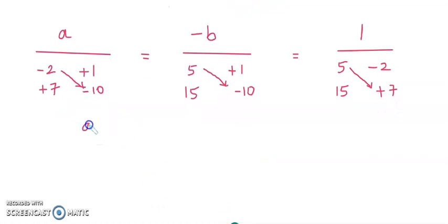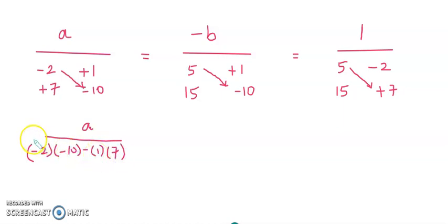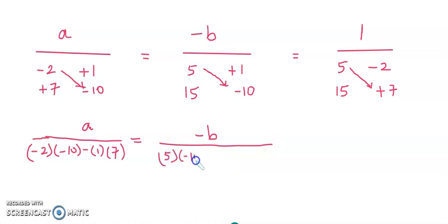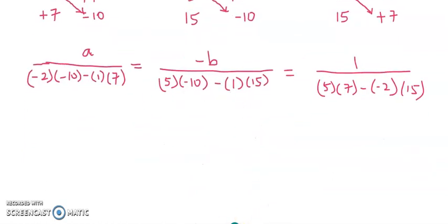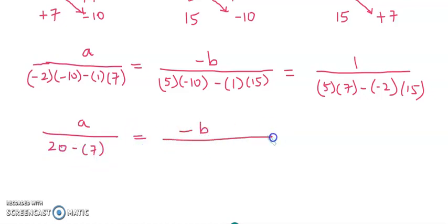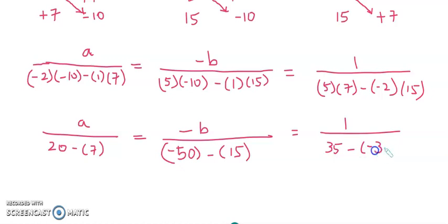So let us write down: a upon, minus 2 multiplied by minus 10 minus 1 multiplied by 7 equals to minus b — 5 multiplied by minus 10 minus 1 multiplied by 15 — equals to 1 divided by 5 multiplied by 7 minus of minus 2 multiplied by 15. So that will be a divided by 20 minus 7, minus b divided by minus 50 minus 15, and this will be 1 divided by 35 minus of minus 30.